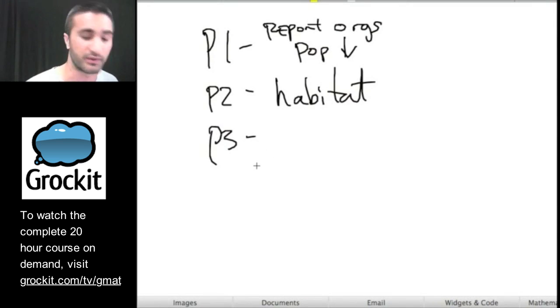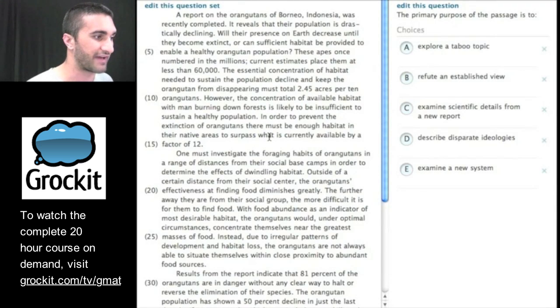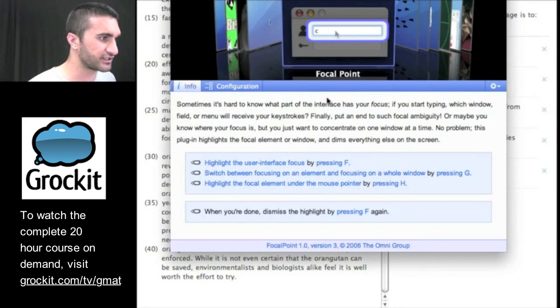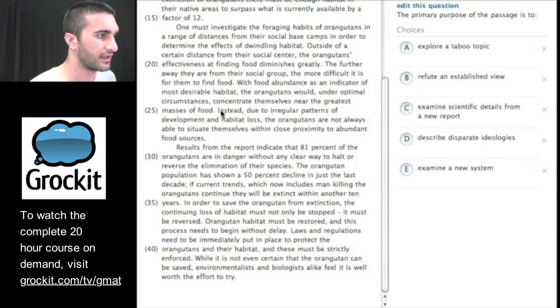So same technique. Again, this is fast. It gets us what we need to answer the question. Paragraph three. If we notice in paragraph three, the author takes a bit of a turn and they start talking about the results of the report and they start talking about what should happen. And that's pretty specific.